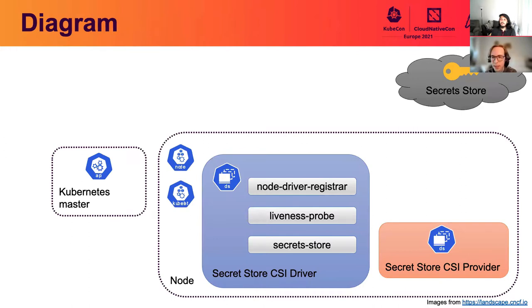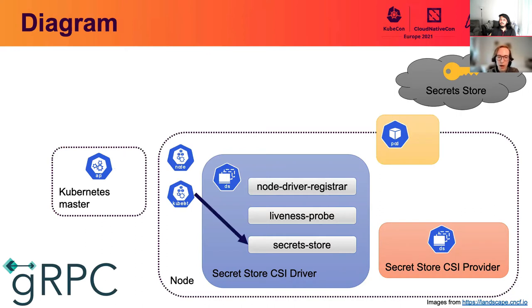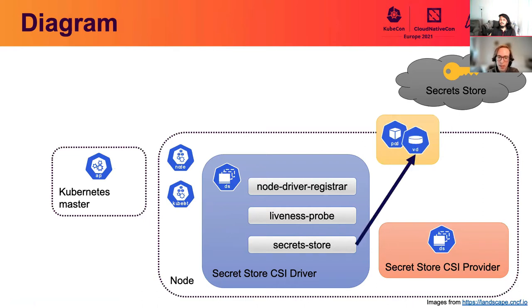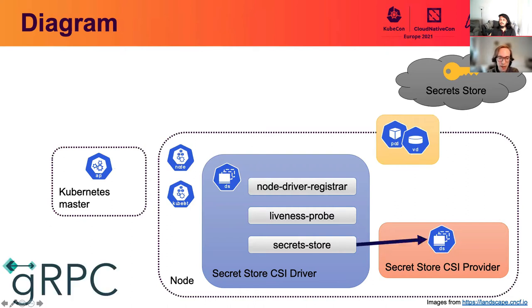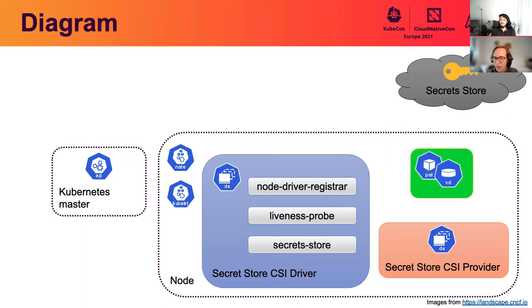So how does the Secret Store CSI driver work? The driver is installed as a daemon set onto each node of the cluster. Additionally, there needs to be a provider-specific daemon set deployed alongside the driver. When a pod is created through the Kubernetes API, it's scheduled onto a node. The kubelet process on the node looks at the pod spec and sees there is a volume mount request. The kubelet issues an RPC to the CSI driver to mount the volume. The CSI driver creates and mounts the tempfs into the pod. The CSI driver then issues a request to the provider. The provider talks to the external Secret Store to fetch the secrets and write them to the pod volume as files. At this point, the volume is successfully mounted and the pod starts running.